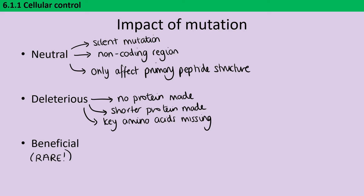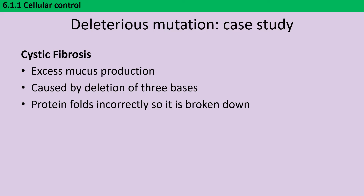There could also be a beneficial mutation, but these are much more rare. Cystic fibrosis is a genetic disease caused by a deletion of three bases in the cystic fibrosis transmembrane conductance regulator protein. Because those three bases have been deleted, one key amino acid is missing and this leads the protein to fold incorrectly. The cell then breaks down that protein, and without it there's excess mucus production which affects the lungs of those cystic fibrosis sufferers.